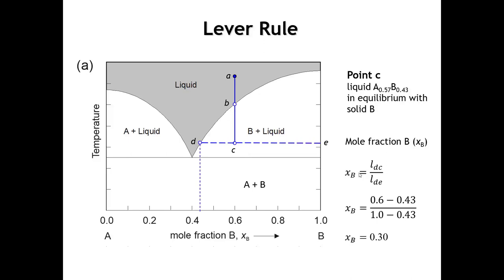As an exercise, if you consider a sample that's 30% pure B and 70% a liquid of composition A=0.57, B=0.43, when you add those two contributions together you'll find the overall composition is still 60% B and 40% A. It has to be, because we're not changing the overall composition of the sample — it's just segregating differently into two phases.